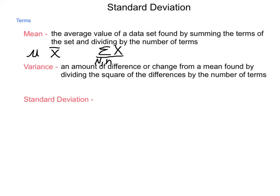Variance has two symbols that are used for it as well. You can use either lowercase letter sigma squared, which stands for the variance of a population, or you can use lowercase s squared to stand for the variance of a sample.